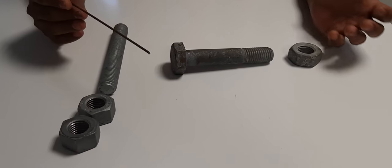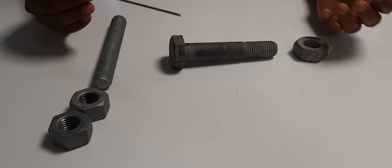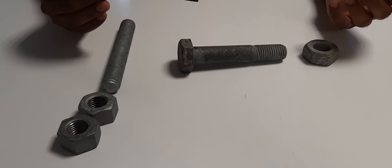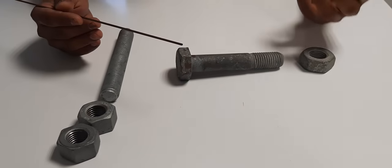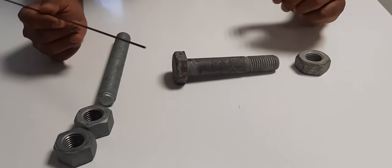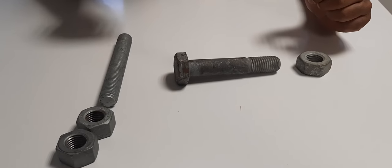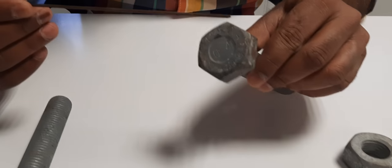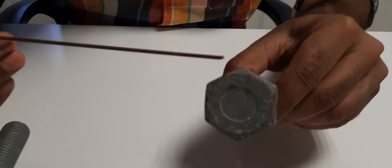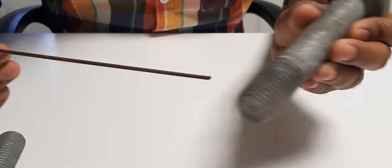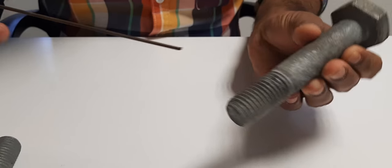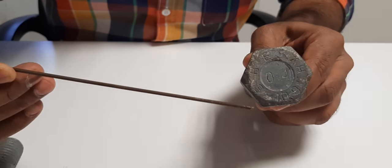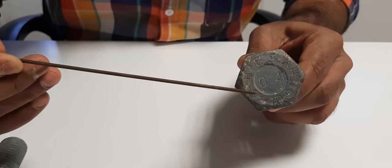It can be removed or dismantled without damaging the joint components. Now we will go to bolt. A bolt has one hexagonal head and another end tapered. If you find the head side you can find the identification mark.